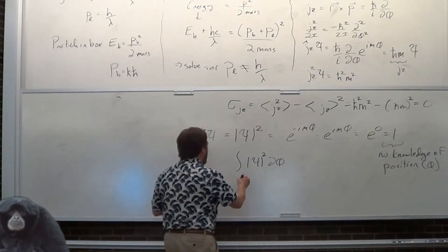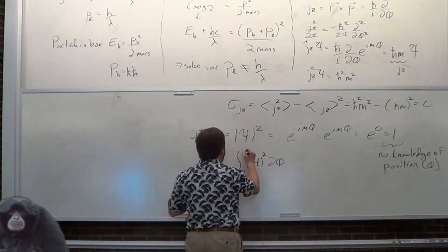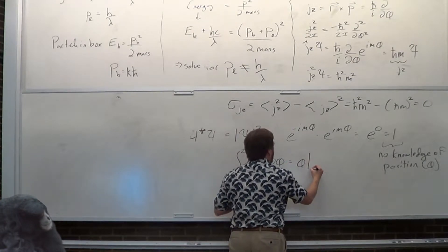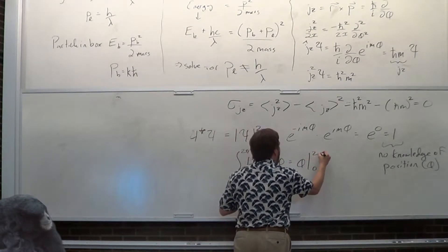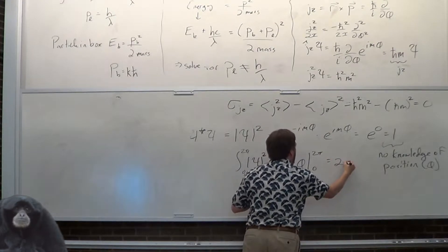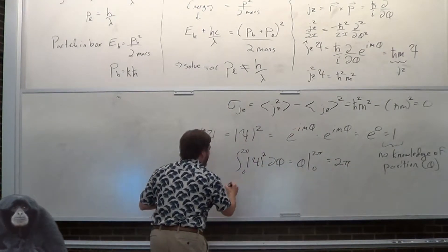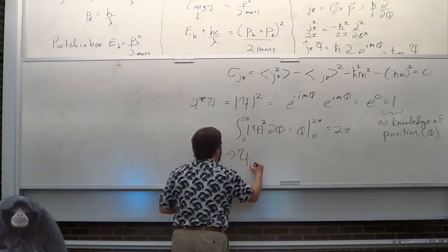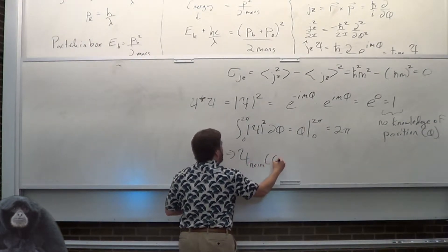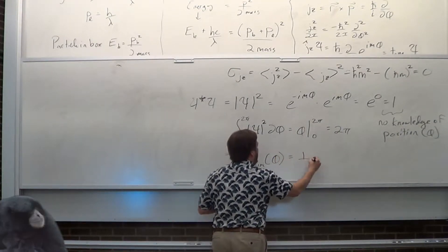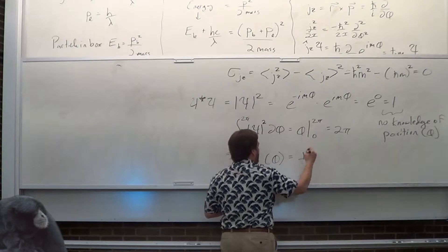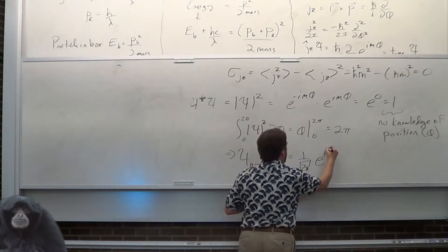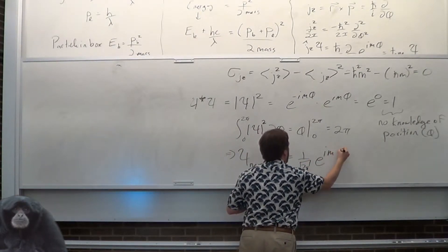We can normalize this. The integral ends up being from 0 to 2π, giving 2π. Therefore, the properly normalized wave function for the 2D case is 1 over the square root of 2π times e to the iMφ.